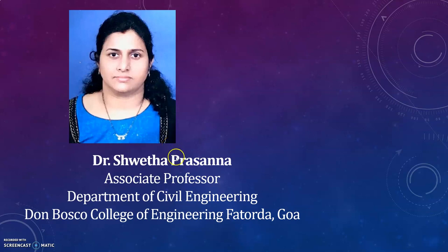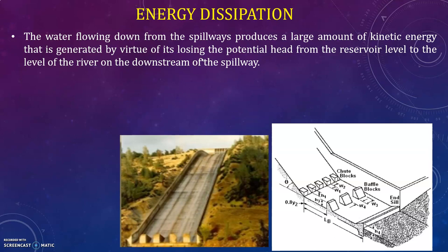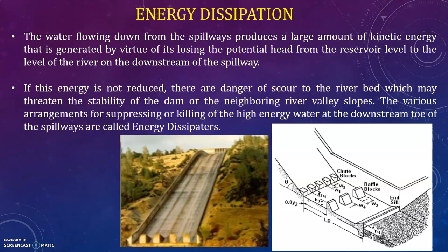Let us discuss energy dissipation. The water flowing down from the spillways produces a large amount of kinetic energy, generated by virtue of losing potential head from the reservoir level to the level of the river downstream of the spillway. If this energy is not reduced, there is danger of scour to the riverbed, which may threaten the stability of the dam or the neighboring river valley slopes. The various arrangements for suppressing or killing the high energy water at the downstream toe of the spillways are called energy dissipators.